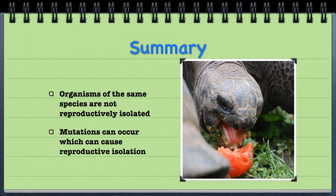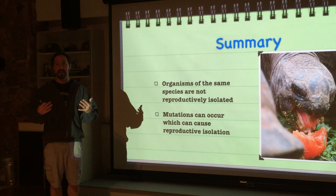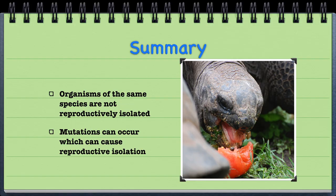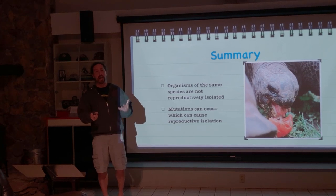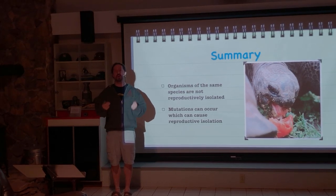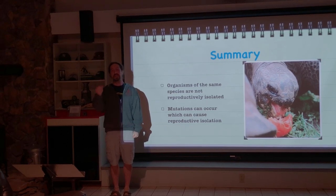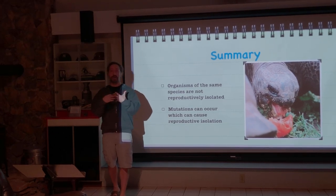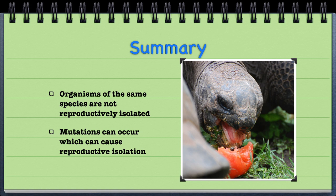In summary, organisms of the same species are not reproductively isolated from each other — there is no reproductive isolation between organisms of the same species. They are able to reproduce and have viable offspring, with nothing to stop them from mating. Over time, mutations can occur which cause reproductive isolation to take place. If there is reproductive isolation, a new species has arisen — either allopatrically, separated by geography, or sympatrically, where there is no geographical separation. Speciation occurs because of small changes which cause reproductive isolation.